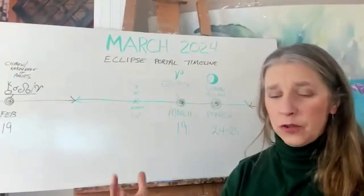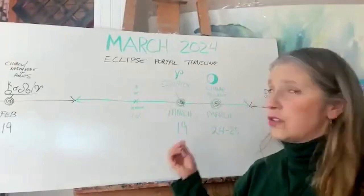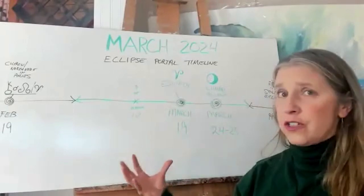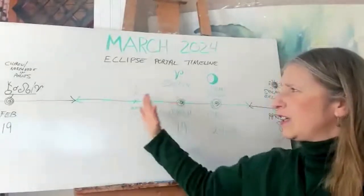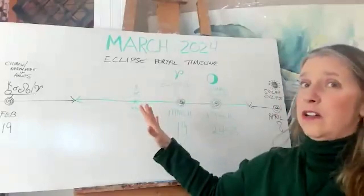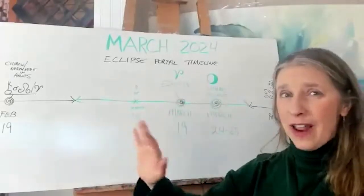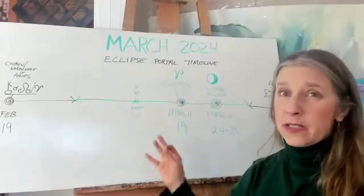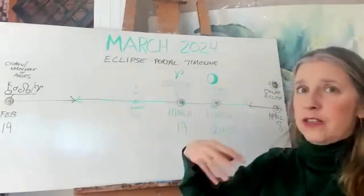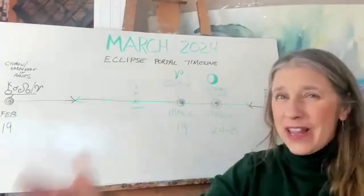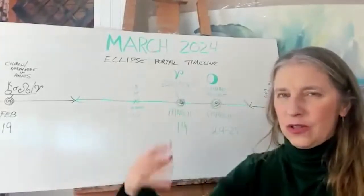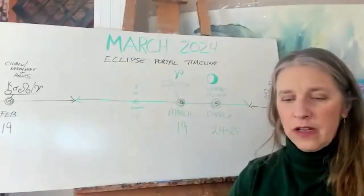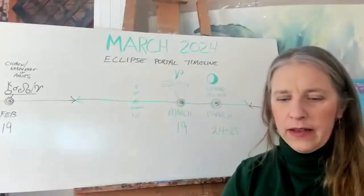We are either going to start seeing the outward expression of these energies. I'm feeling like we probably won't see a lot of exterior things happening, stuff in the news in March, we might, but I'm feeling like it'll be after the eclipse that the waves of this whole event period will start to manifest out there in the world.